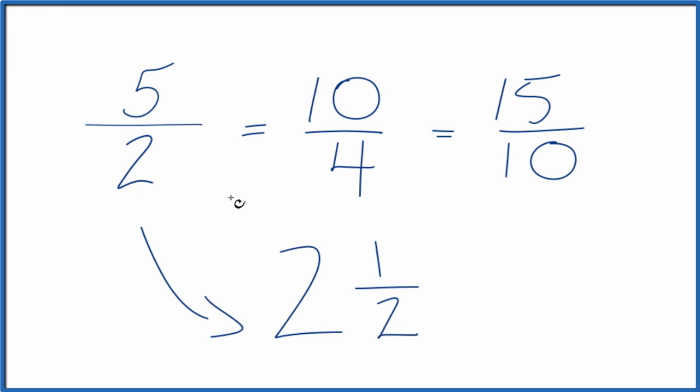And 2 and a half, that's also equal to 5 halves. You can check that. 2 times 2 is 4, plus 1, that's 5. Keep the denominator the same. 2 and a half and 5 halves, they're equivalent.